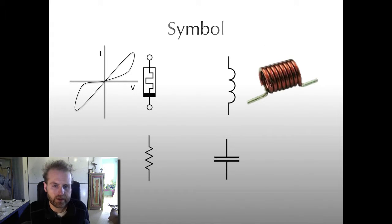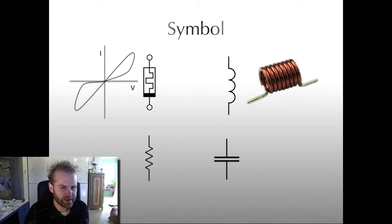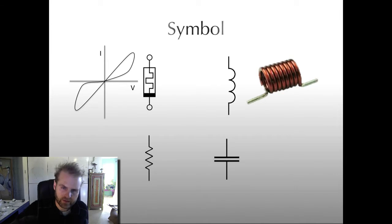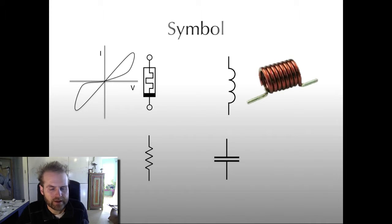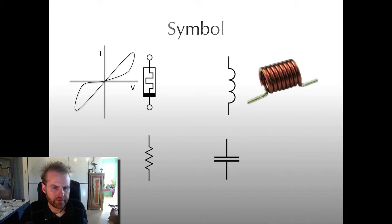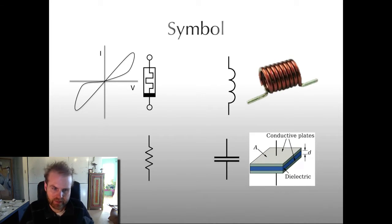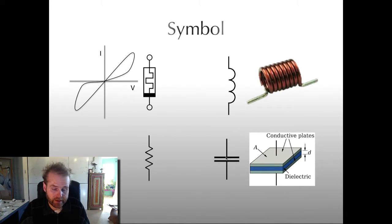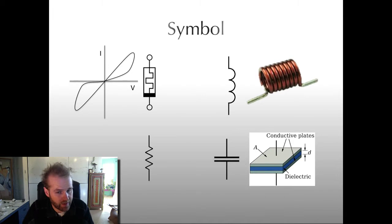First, here's the inductor. Notice that the symbol for the inductor is both symbolically representative of what an inductor is — in this case a wire that has been wound to store magnetic energy — and it's also really easy to draw. So: symbolic of what an inductor is, easy to draw. Capacitor, same thing. You have two parallel plates. Symbolically, these two lines represent what a capacitor is. Very easy to draw, symbolically representative.